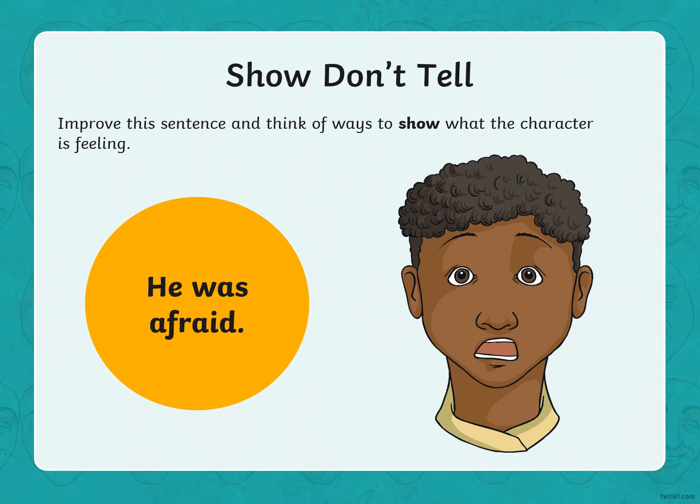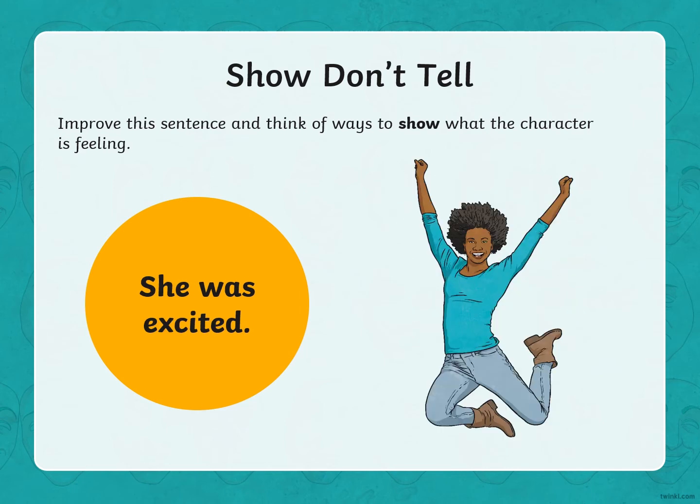Capital letters for names as well, remember. 'She was excited.' Underneath, show me she was excited. What do you do when you're excited? Think about how you might act, some of the things that you might do. Pause the video to give you some writing time.